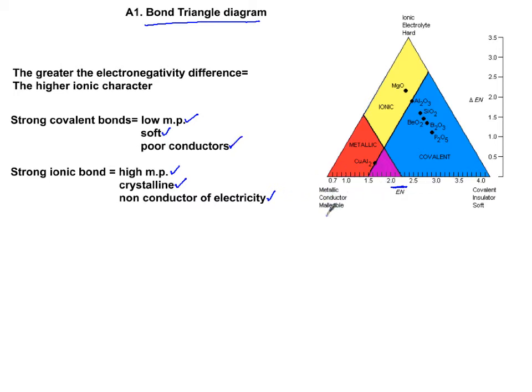If you look at the x-axis, the extreme left is metallic characters, which are conductors and malleable. Extreme right are covalent bonds and compounds, which are insulators and soft. The tip at the top of the triangle is the ionic compounds, which are electrolytes. They are molten and aqueous solution conduct electricity, and they tend to be hard solids.